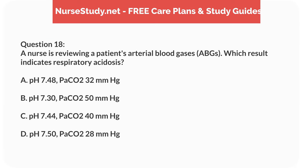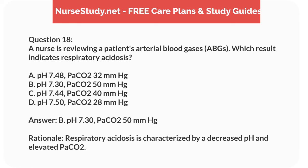Question 18. A nurse is reviewing a patient's arterial blood gases (ABGs). Which result indicates respiratory acidosis? A. pH 7.48, PaCO2 32 mmHg. B. pH 7.30, PaCO2 50 mmHg. C. pH 7.44, PaCO2 40 mmHg. D. pH 7.50, PaCO2 28 mmHg. Answer: B. pH 7.30, PaCO2 50 mmHg. Rationale: Respiratory acidosis is characterized by a decreased pH and elevated PaCO2.